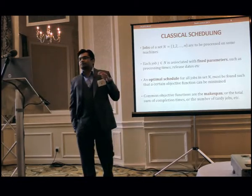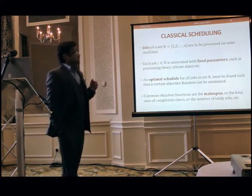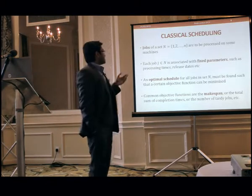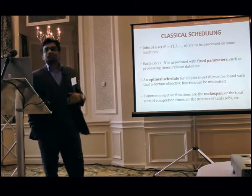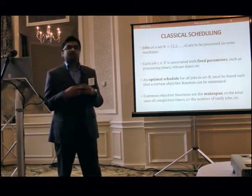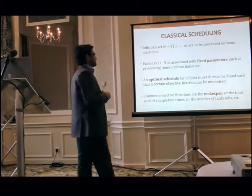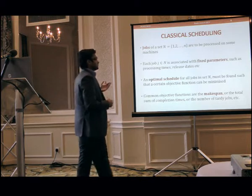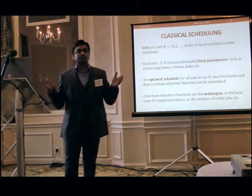I'll go through a quick background on classical scheduling, then move on to my particular research. In classical scheduling, we have N jobs to be scheduled on a certain number of machines. Each job J comes from set N — which could be 1, 2, 3, up to M — and they have fixed parameters such as processing times, release dates, etc. An optimal schedule for all jobs in set N is one where a certain objective function is minimised. This objective function can be the makespan, the total sum of completion times, the number of tardy jobs, and so on.